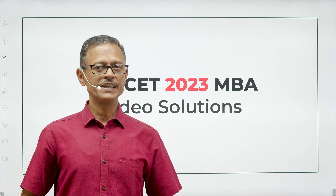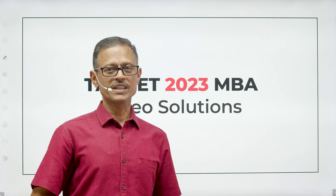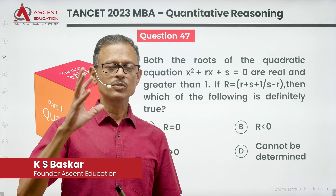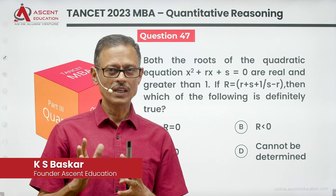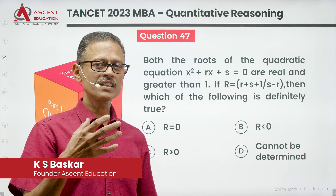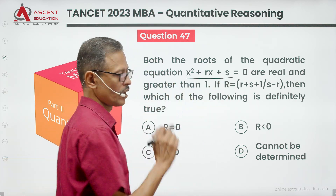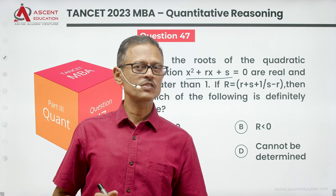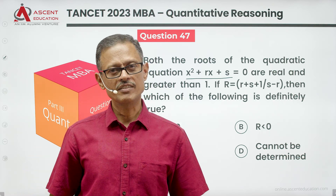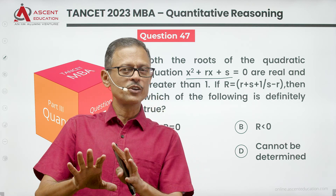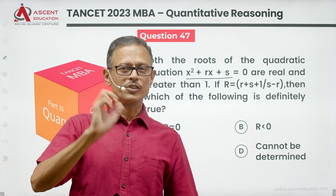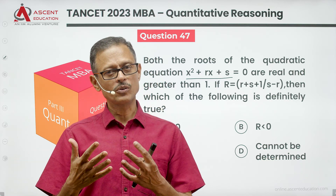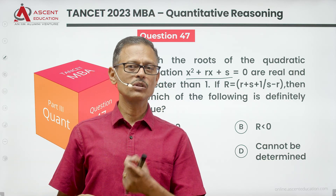This is a GMAT 2023 MBI question for a video solution in the Quantitative Aptitude section, Question Number 47. This question can be solved in exam mode quickly, but it contains important quadratic equation concepts and very interesting number properties concepts. We'll use this question to learn those new concepts along the way.